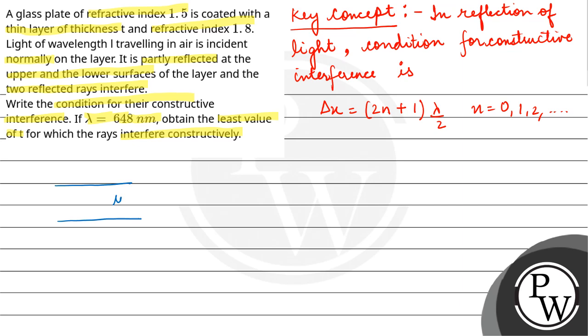We have a glass plate with refractive index 1.5, and it is coated with a very thin layer of refractive index 1.8. Light is falling here initially at 90 degrees. It is incident normally, so it gets partially reflected and partially transmitted. Here both reflected rays 1 and 2 show constructive interference.